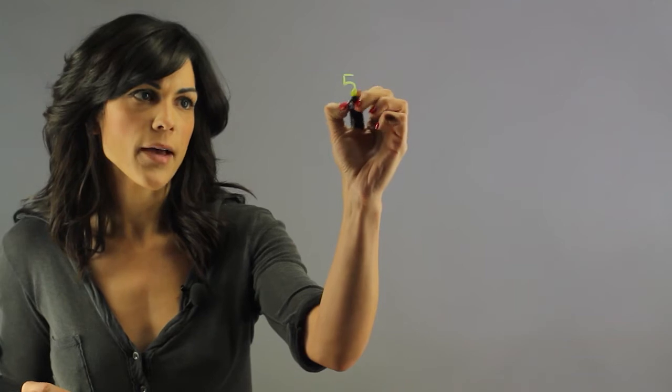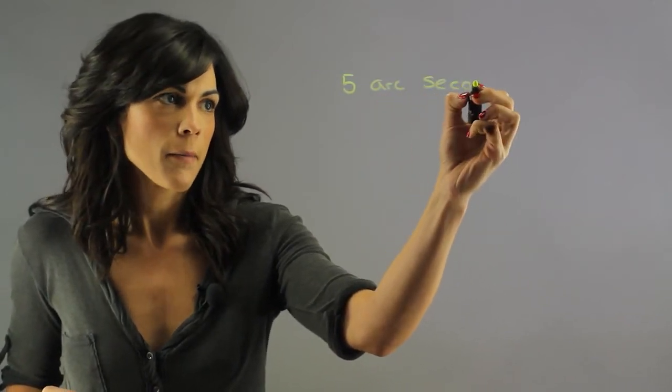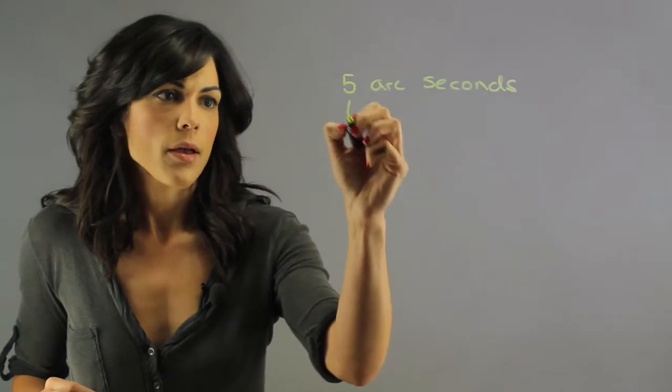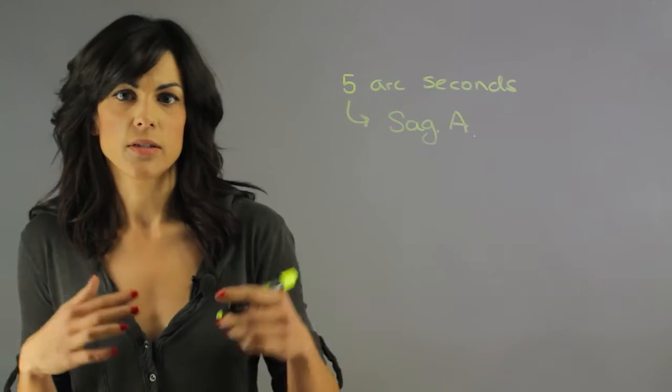So when we look at the galactic center and we look at a tiny, tiny piece of the sky. In fact, it is five arc seconds, which is a very small piece of the sky. We have something called Sagittarius A, and we generally call it Sag A.